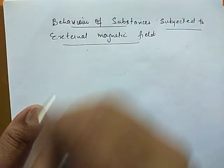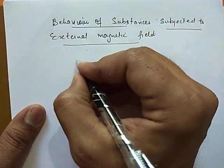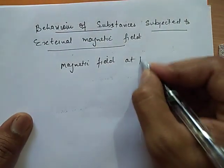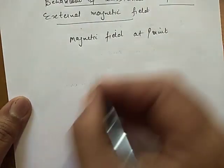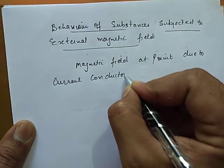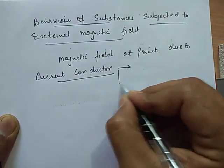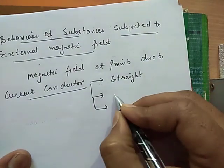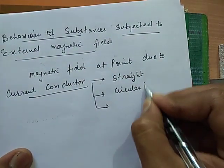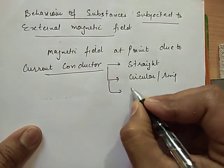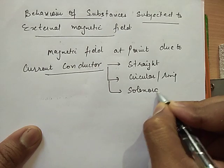As you all know, we have calculated magnetic field at a point due to current conductor. These current conductors are of different types. May be straight conductor, may be circular ring type. In circular ring type we can say we have studied solenoid, in fact toroid.